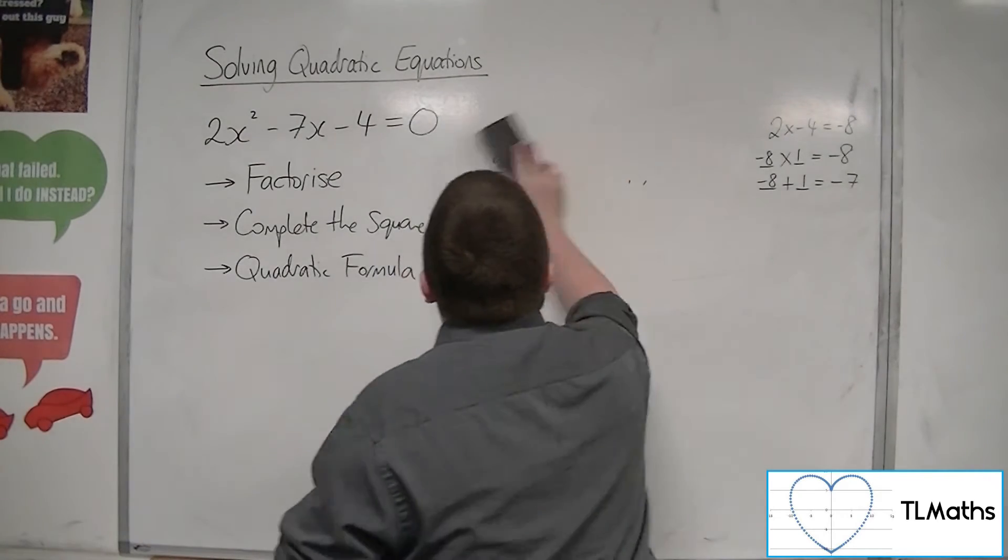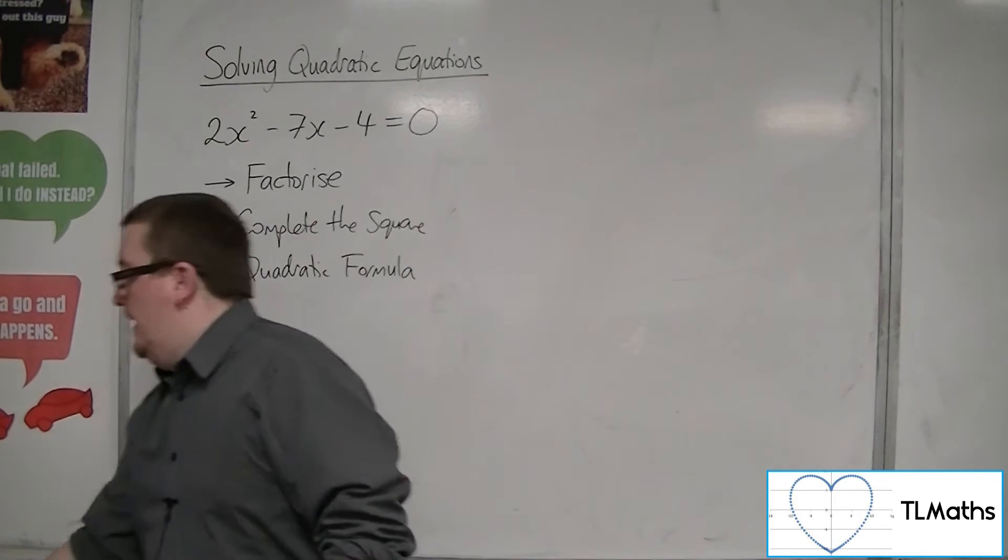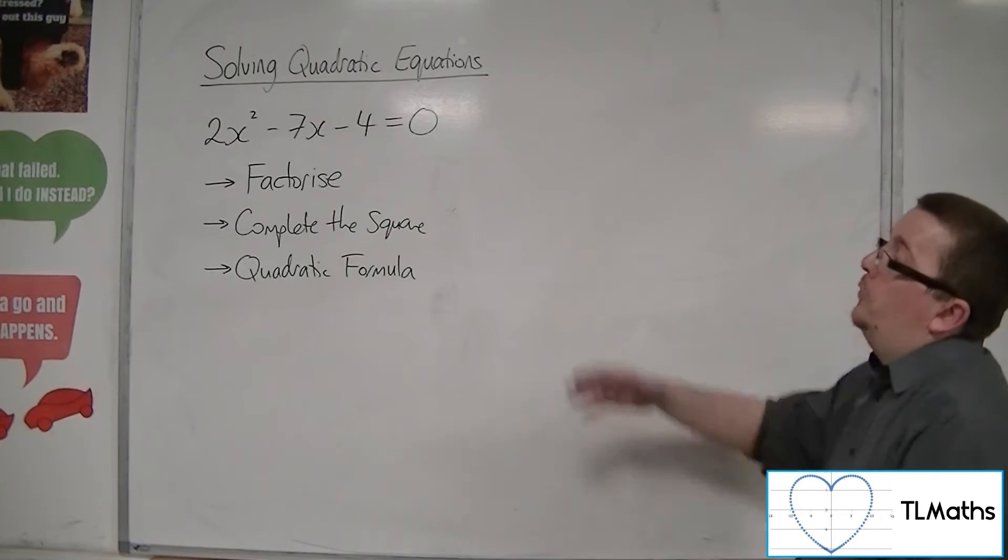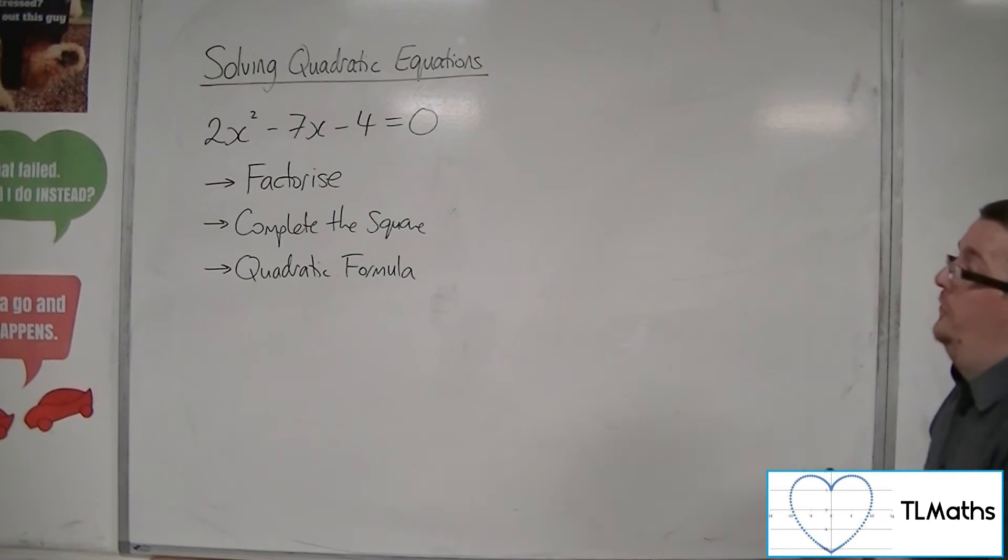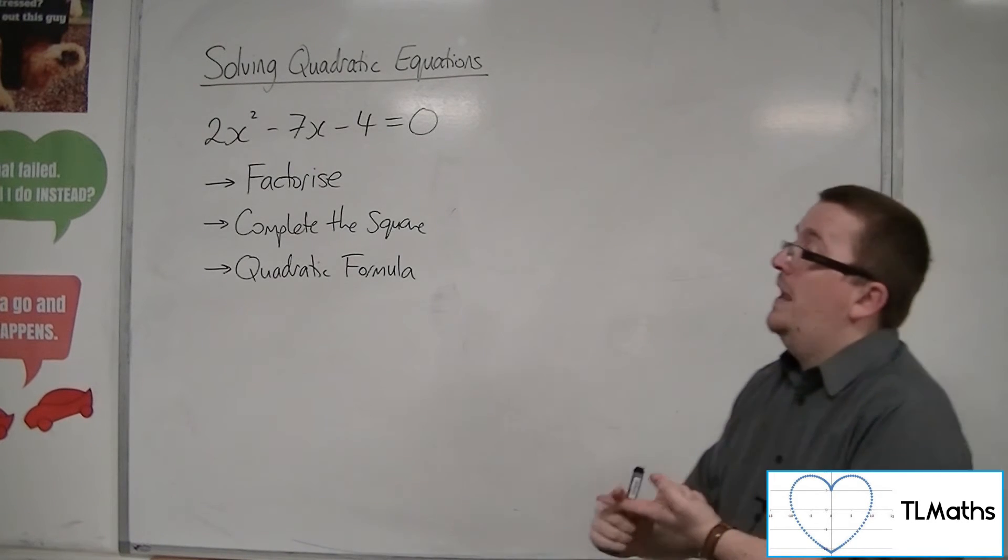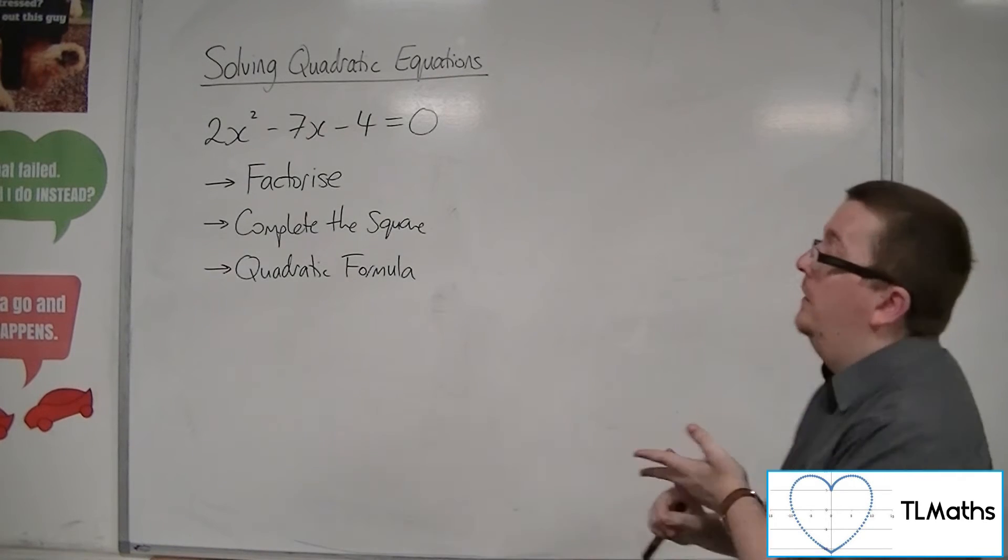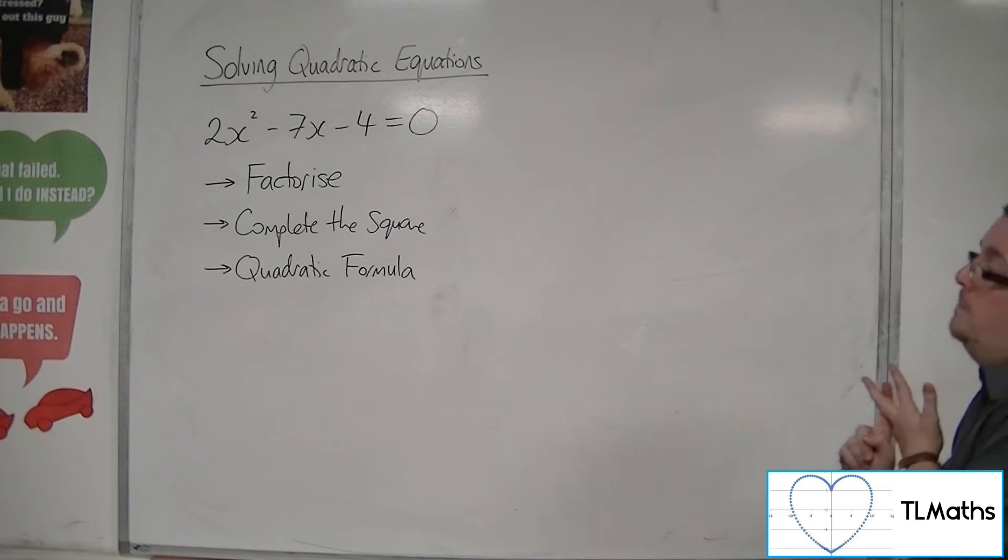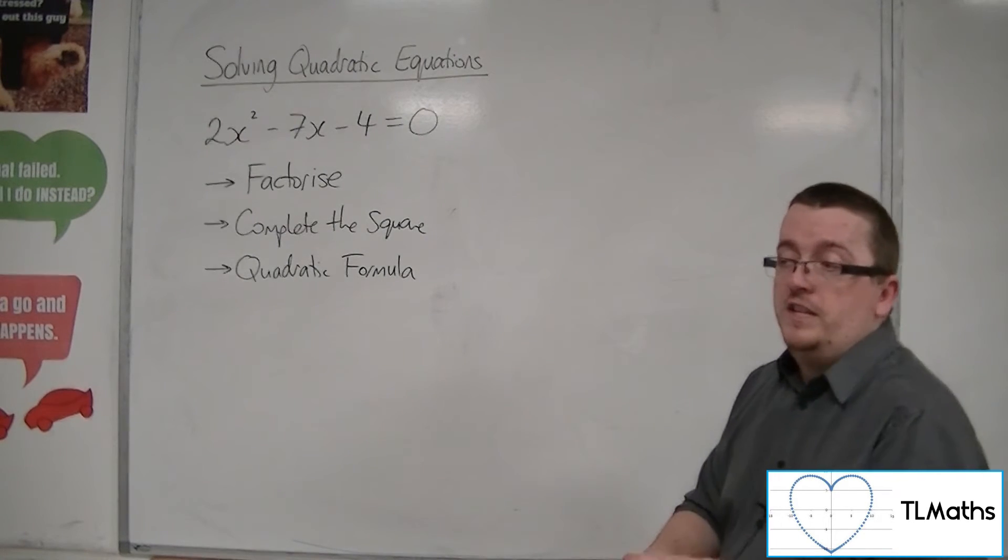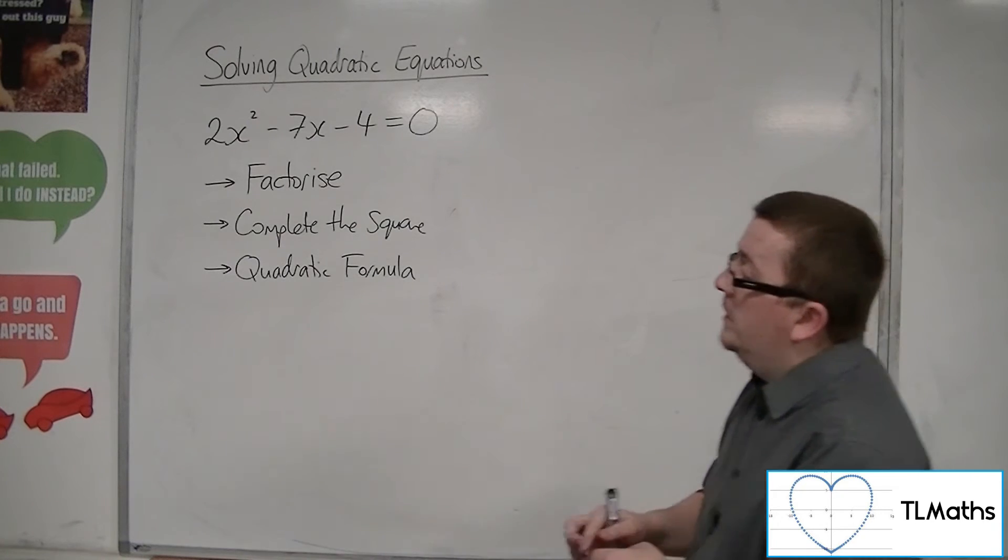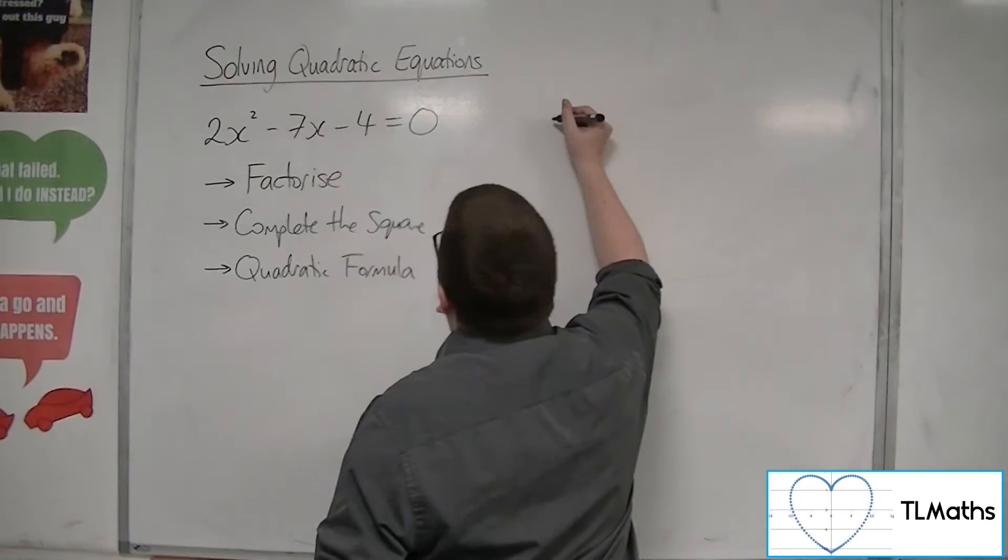Now the second method that I'm going to show is completing the square and solving. Now this isn't one that I would automatically go for completing the square, because I've got a 2 in front of the x-squared. I know I'm going to have difficulties when it comes to that 7 as well. So my gut feeling is saying this is not the method that I would try to use in this case. But let's go through and make sure that we get to the same answer.